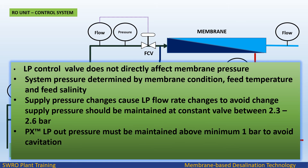The LP control valve does not directly affect membrane pressure; system pressure is determined by membrane condition, feed temperature, and feed salinity. Supply pressure changes cause LP flow rate changes, so to avoid this, supply pressure should be maintained at a constant value between 2.3 to 2.6 bar. The PX trademark LP outlet pressure must be maintained above a minimum of 1 bar to avoid cavitation.